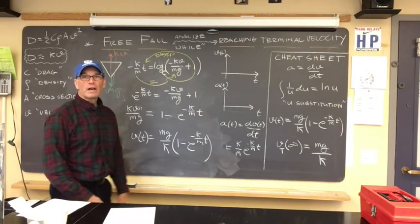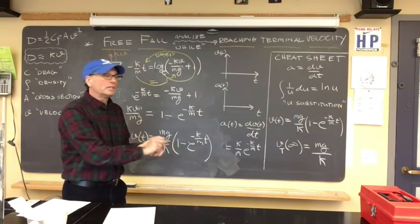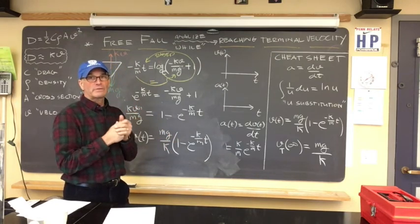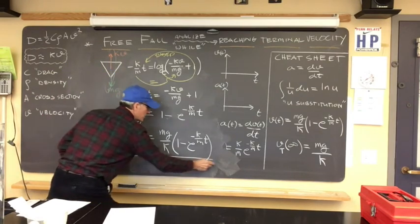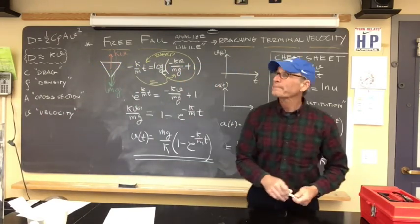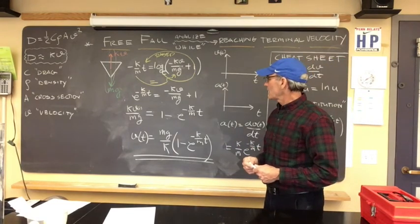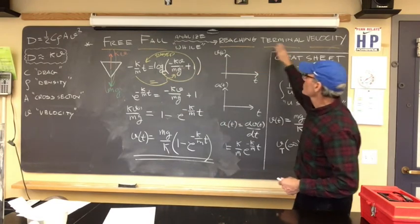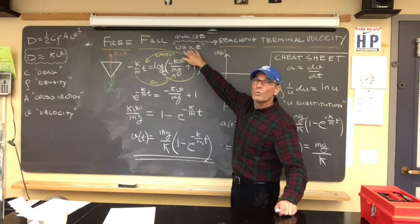I was sweating there for a bit — I thought I was going to get lost. But I successfully determined the expression for the speed of an object influenced by air resistance — the drag force — going from a rest position to terminal velocity. This is the expression for what's going on while it's falling.